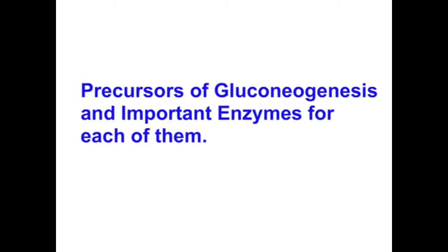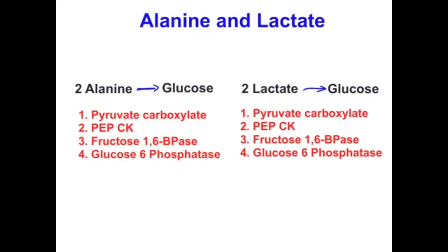Let's move on to all the precursors involved in gluconeogenesis and the important enzymes for each. First is alanine, which comes from proteolysis. In the very first week of fasting and starvation, the predominant source of gluconeogenesis is skeletal muscle proteolysis, and the amino acid coming from that predominantly is alanine. Alanine is carried to the liver and converted to glucose — technically two alanine molecules can make one glucose.